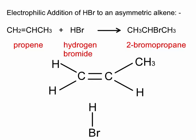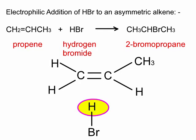Look in the middle here at the structure of propene and you'll see why it's asymmetric. It's not symmetrical about the vertical axis. The left-hand carbon has two H's directly attached, while the right-hand carbon has one H and a methyl group attached.